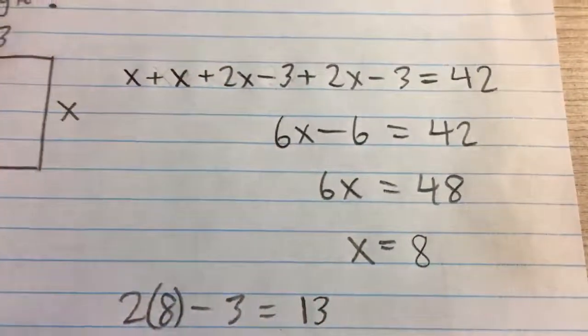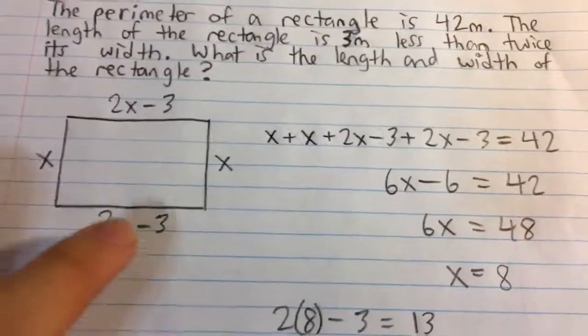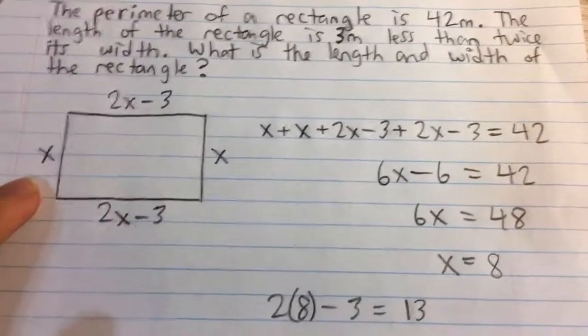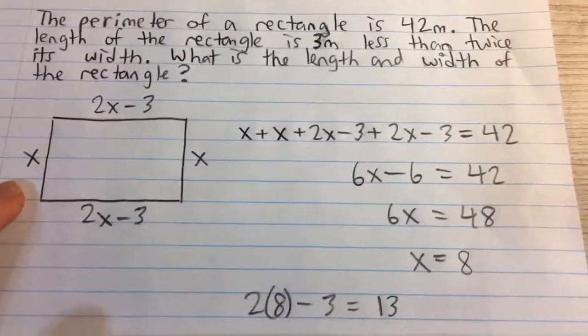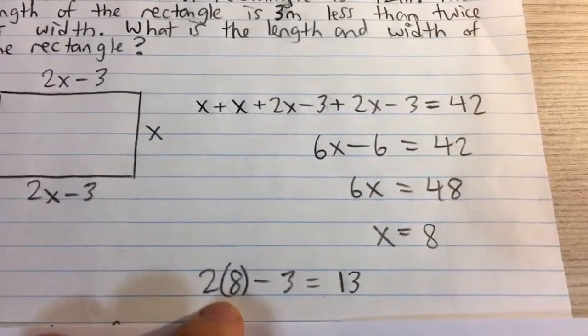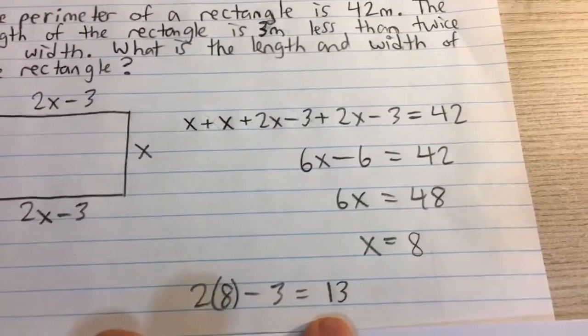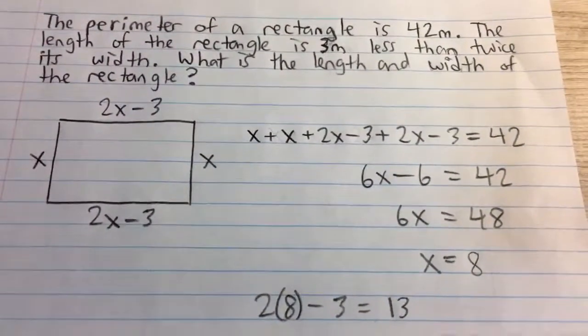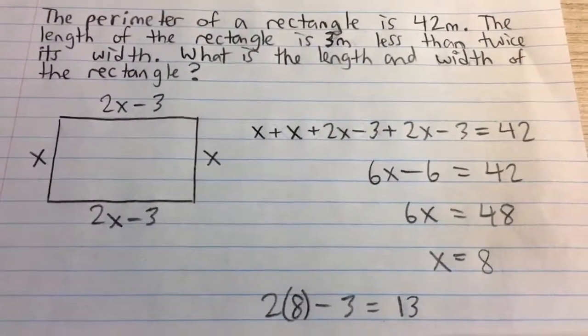And so that allows us to plug it in for these sides. So actually x is just the width of the rectangle, so the width is 8, and the length is 2x minus 3. In other words, 2 times 8 minus 3, or 13 meters. So the width is 8 meters, the length is 13 meters.